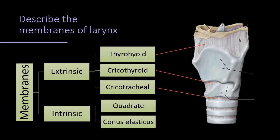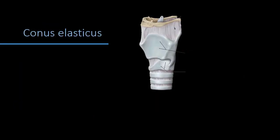The intrinsic membranes are of two varieties: the quadrate membrane, which is quadrangular in shape, and the conus elasticus, which is cone-shaped and elastic.